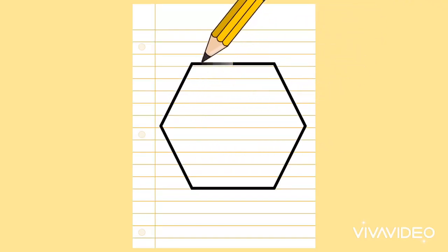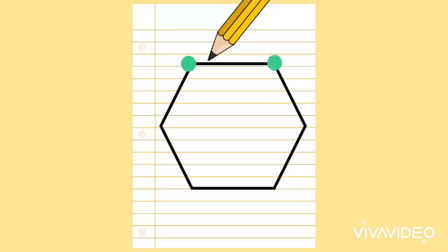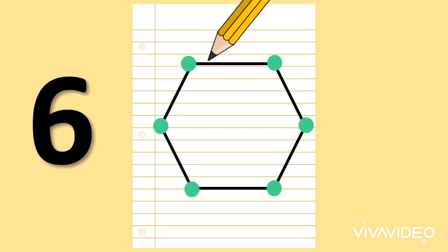What shape am I drawing? A hexagon. And how many corners does a hexagon have? Let's count. One, two, three, four, five, six. Six corners.